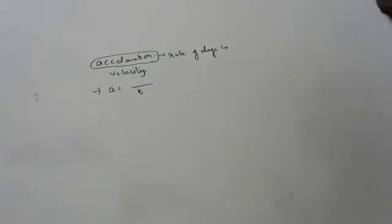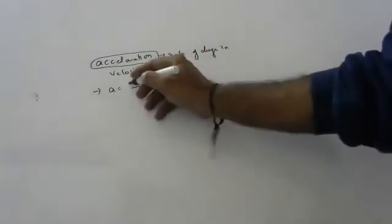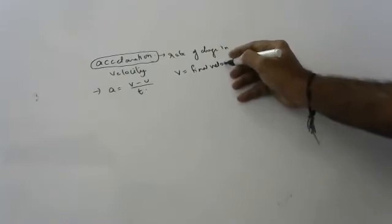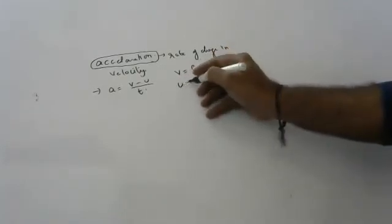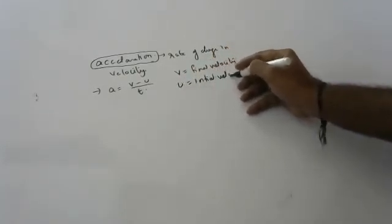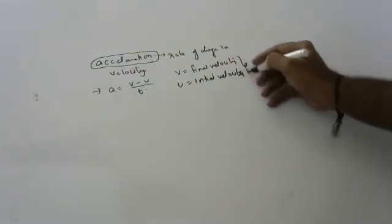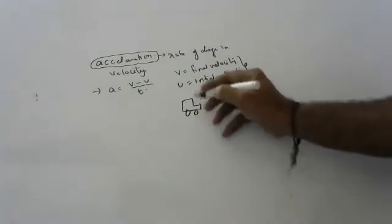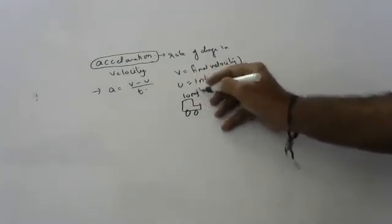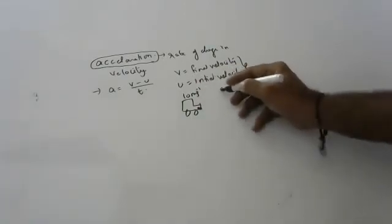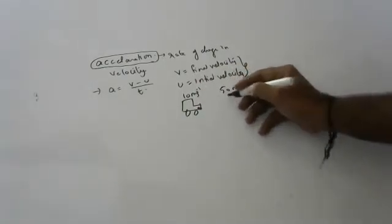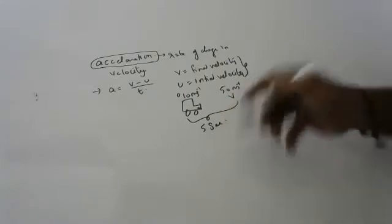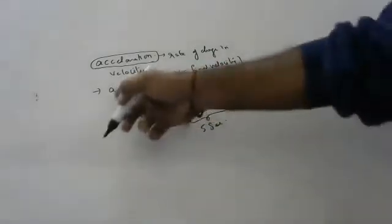Change in velocity is final minus initial. V is final, U is initial. For example, imagine you are going in a car initially at 10 meters per second. You press the accelerator and go to 15 meters per second. If this happens in 5 seconds, then acceleration equals 15 minus 10 divided by 5.